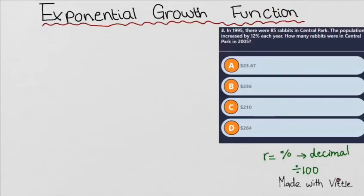We will write the equation. Y is the final amount we need to find. The initial amount is 85, which is the number of rabbits. The 1 plus r stays the same in the exponential growth function equation.